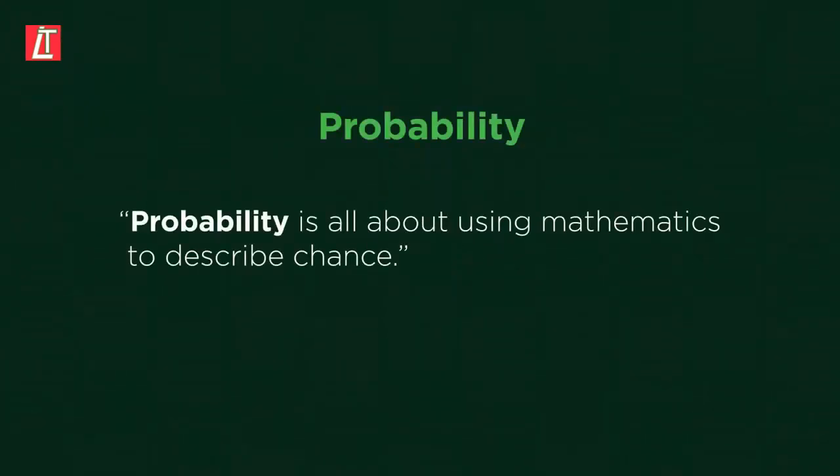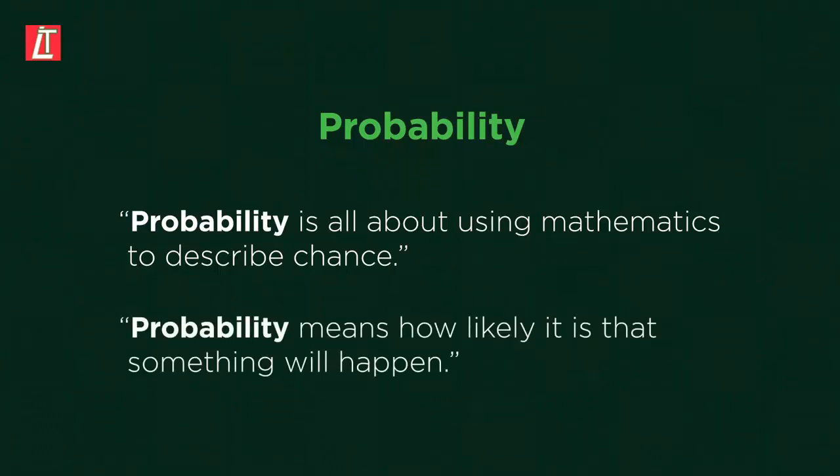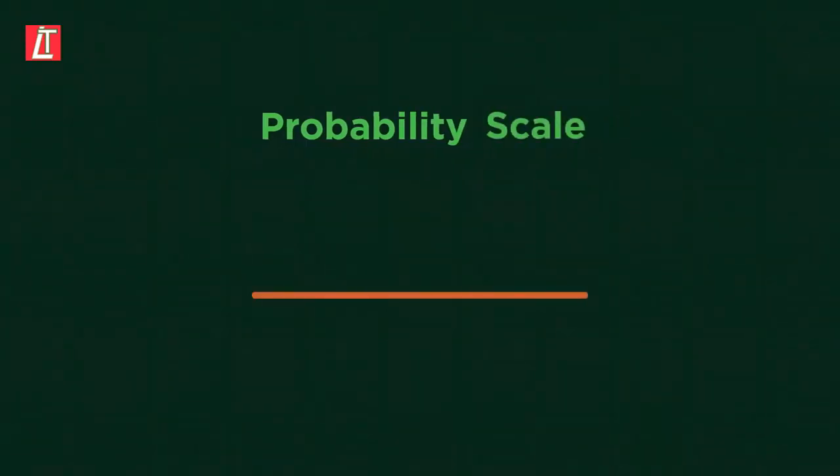Probability is all about using mathematics to describe chance. Probability means how likely it is that something will happen. We use a probability scale to know more precisely when an event occurs.